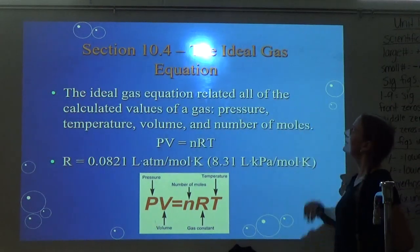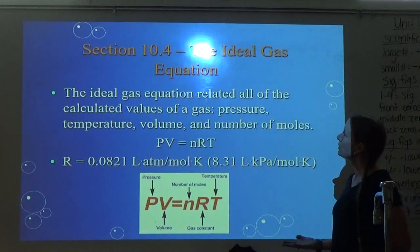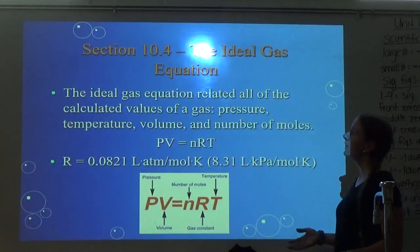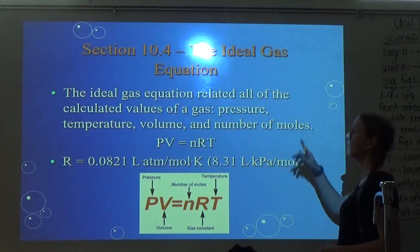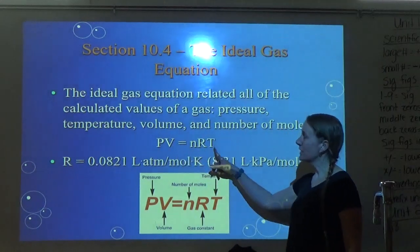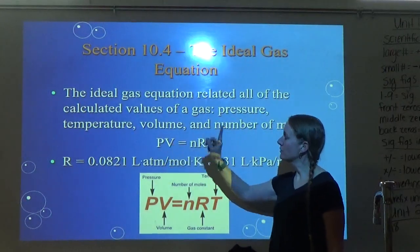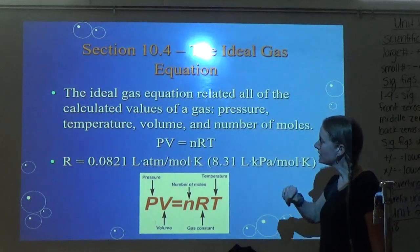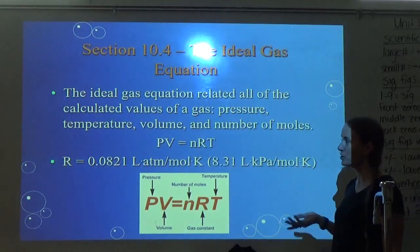Section 10.4 is the ideal gas equation. The ideal gas equation relates all the calculated values of a gas: pressure, temperature, volume, and number of moles. The equation is PV equals NRT. P is pressure, V is volume, N is number of moles, R is your ideal gas constant, and T is temperature.